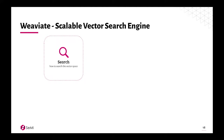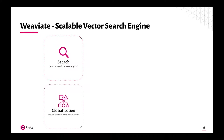Weaviate has two core features. The first is search — or as we like to say, search and discovery in your data. The demo I'm going to show focuses completely on search and how to find things using Weaviate. On the other hand, we also have classification. The easiest way to think of classification is that Weaviate can automatically make relations in your datasets, whereas search requires some human or machine input to get to insights.